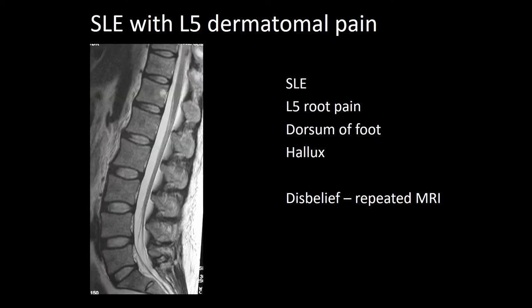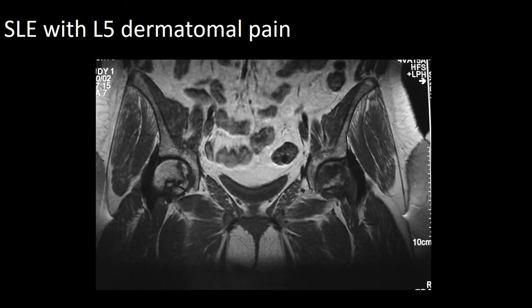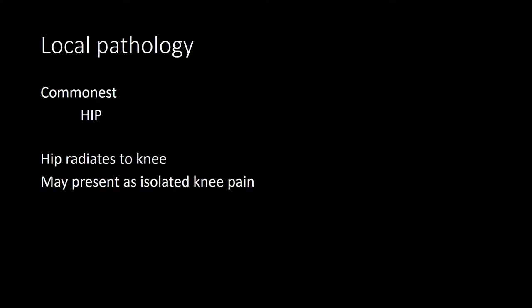Here is a patient with lupus who presented with a clear L5 distribution of pain all the way down to the dorsum of the foot, involving the hallux. An MRI scan confirmed a completely normal spine. In disbelief I repeated the scan including the pelvis, where one can clearly see the change in signal in the left femoral head indicating avascular necrosis from steroid usage to treat the lupus. One also needs to remember that hip pathology may present as isolated knee pain, so any patient presenting with knee pain must have the hip examined to confirm there is no primary hip pathology.